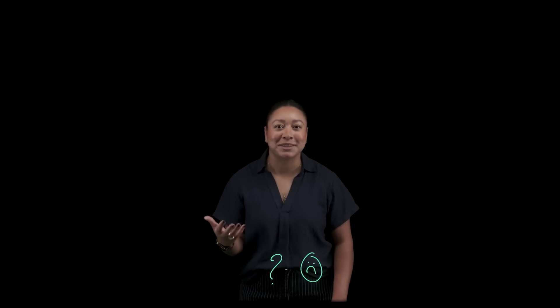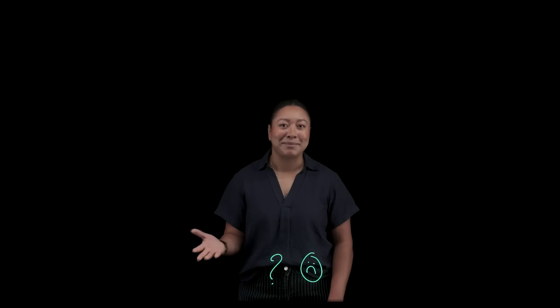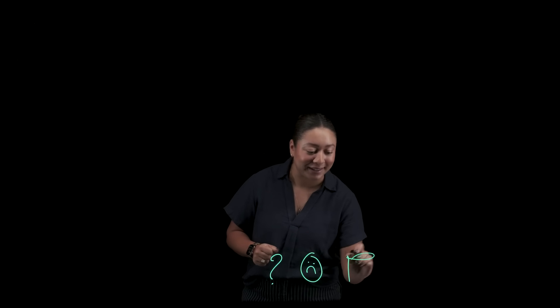Aren't AI agents supposed to know everything on the internet? You've probably heard someone say large language models are powerful, but on their own they're kind of like brilliant interns with literally no memory and no access to your systems. They can talk, but they don't know your data, and they certainly cannot act on your behalf.